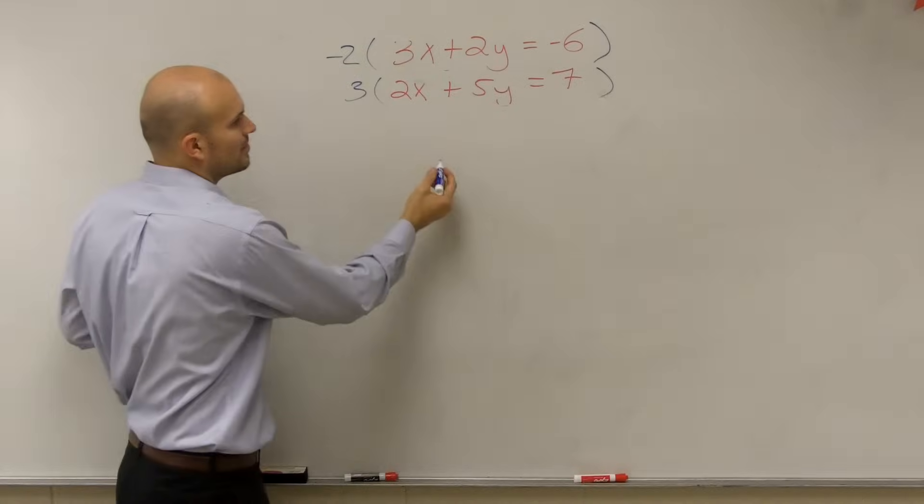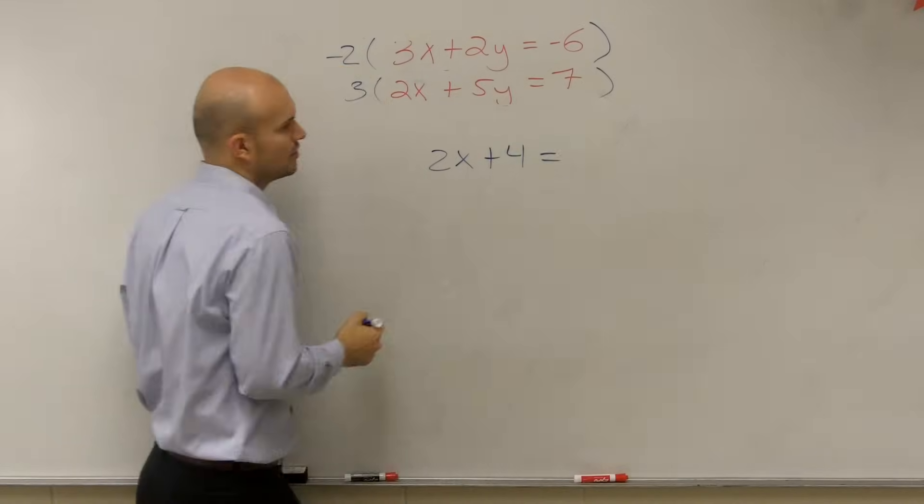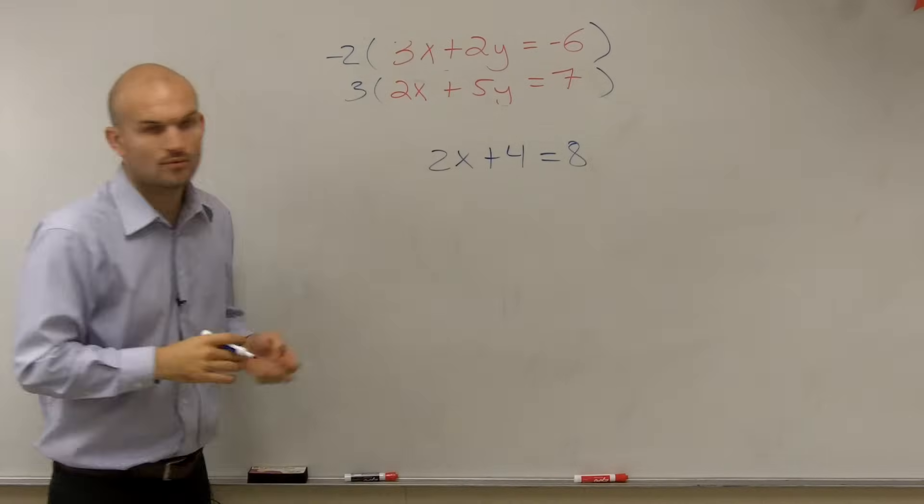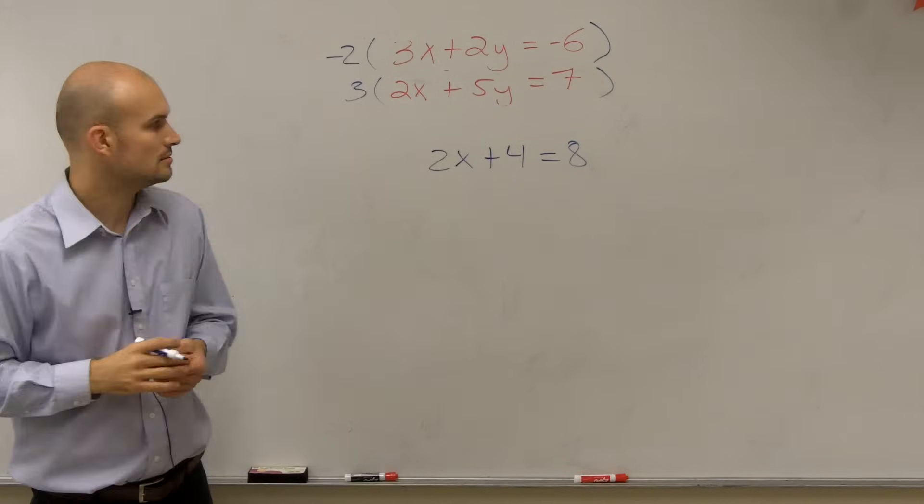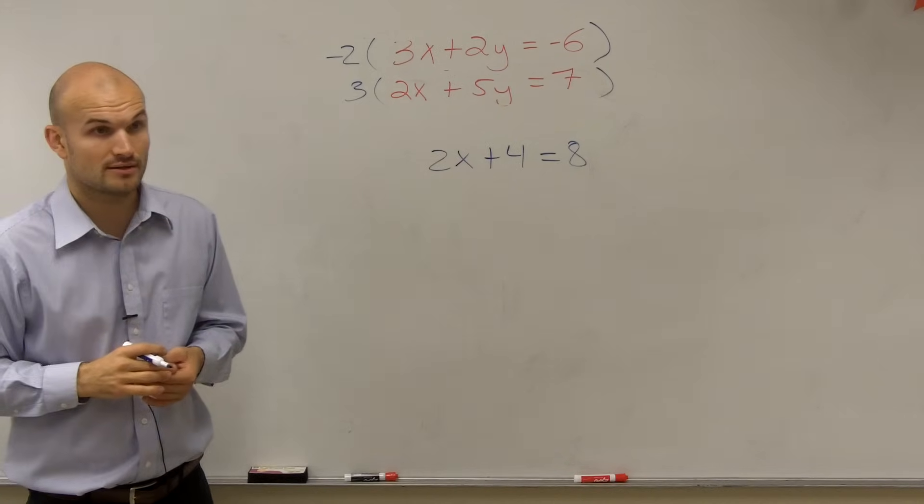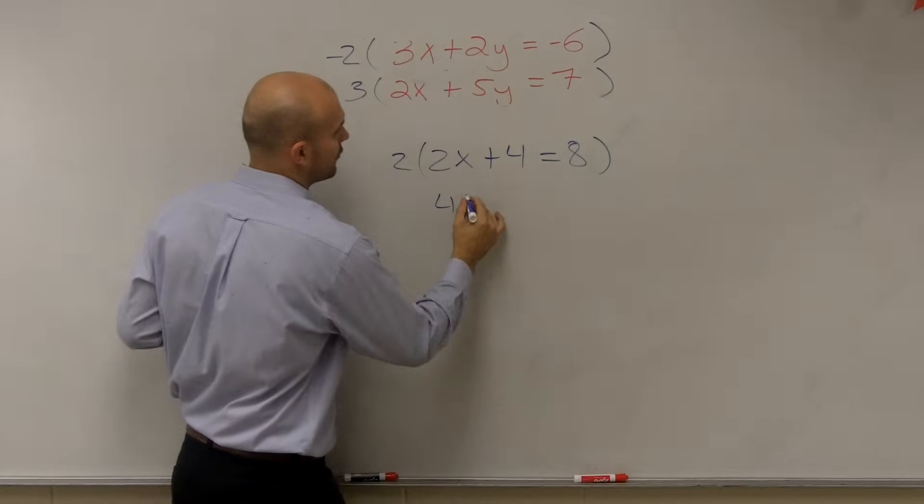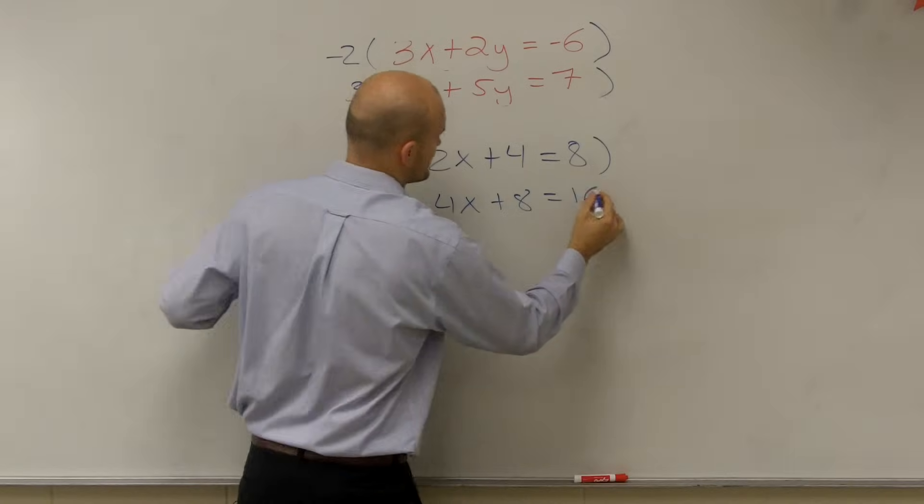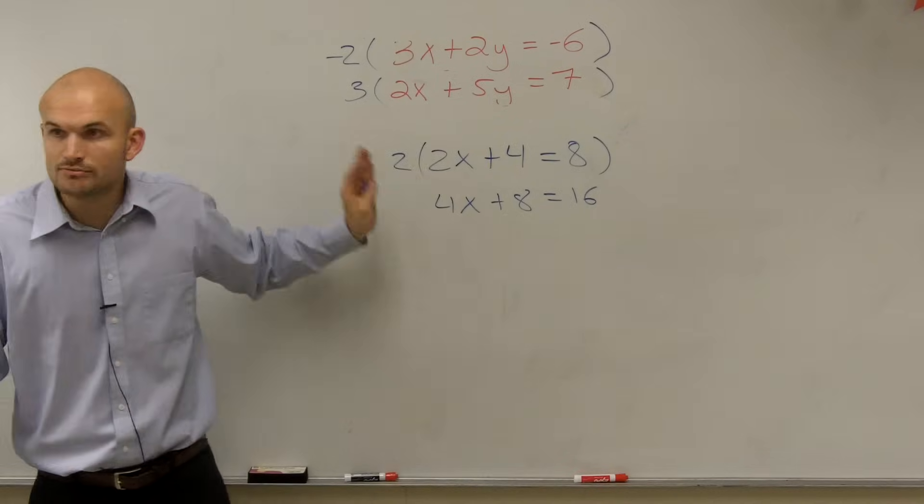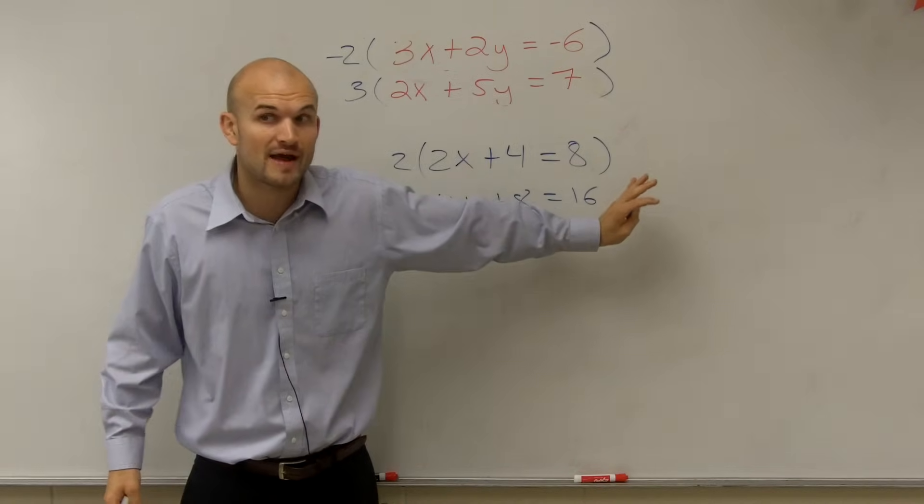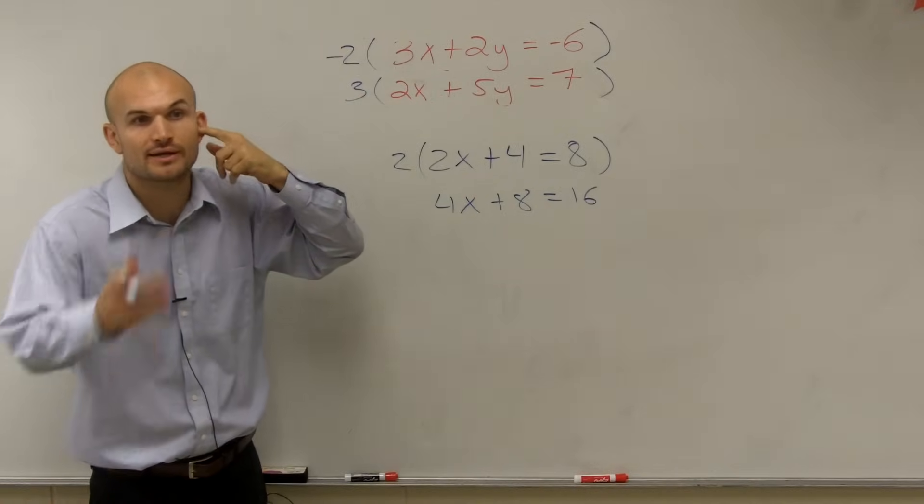I'm going to talk about that in a second. Well, let's take a look at 2x plus 4 equals 8. What's the answer to this? 2, right? The answer to this is 2. If I multiply everything by 2, I get 4x plus 8 equals 16. What's the answer to that? 2. It doesn't matter. As long as you multiply everything by your factor, you're not changing the equation. That's why it's okay for me to multiply by negative 2 or 3.